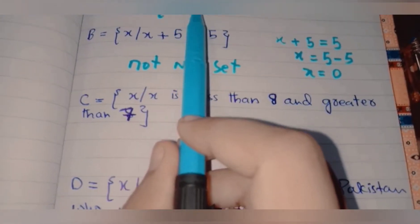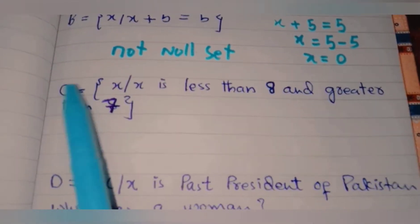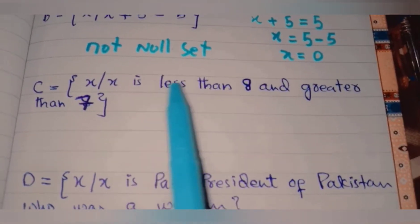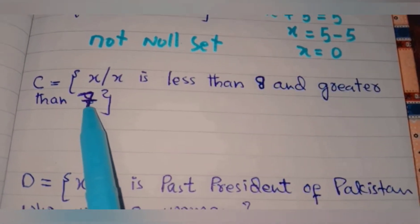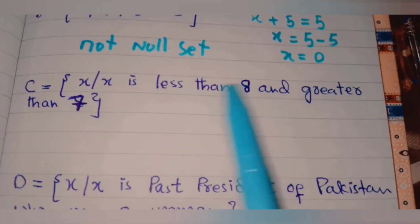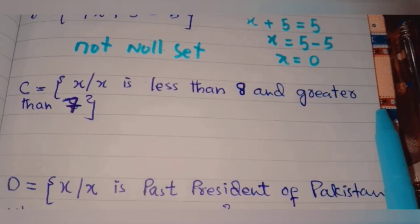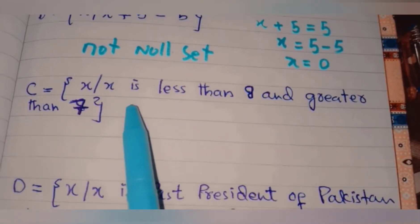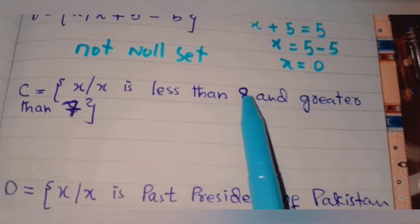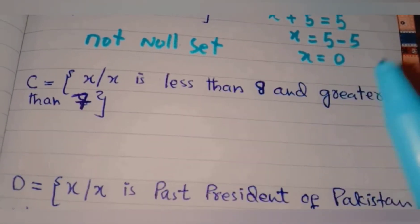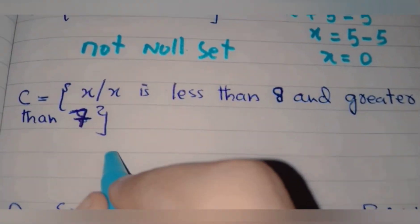Question number two, part C: C equals the set x such that x is less than 8 and greater than 7. Since there is no integer between 7 and 8, this is a null set.